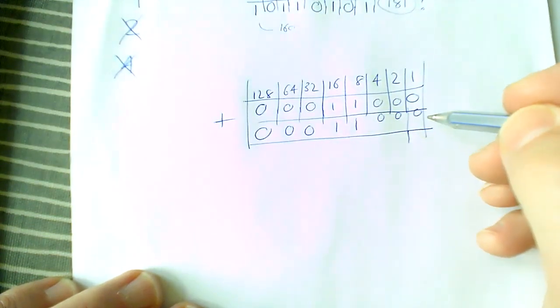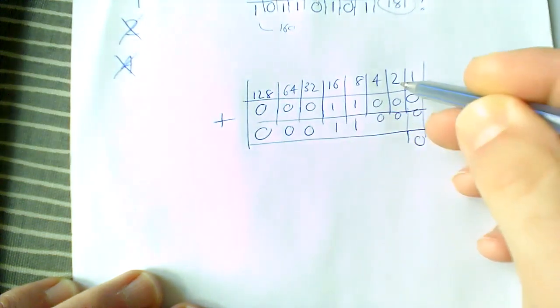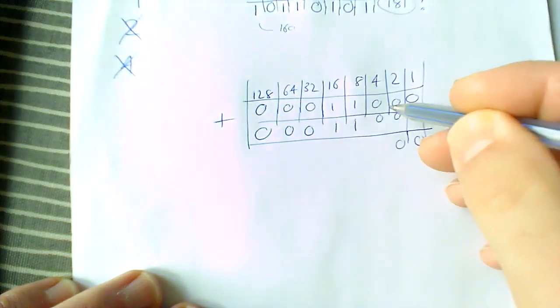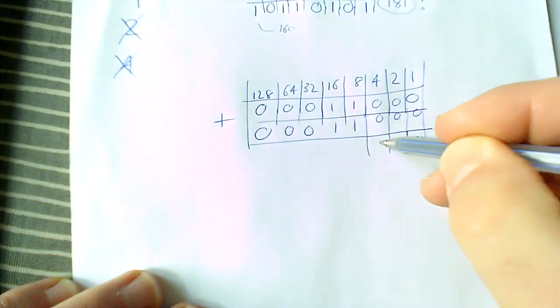So the first we're going to do: zero in the one column, zero. One plus zero one is zero. Zero, zero. That's zero.